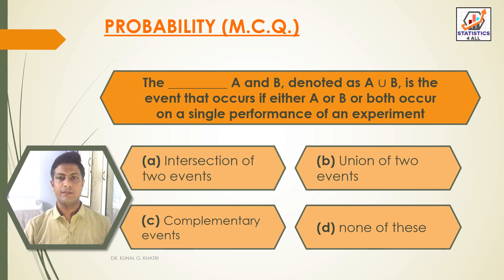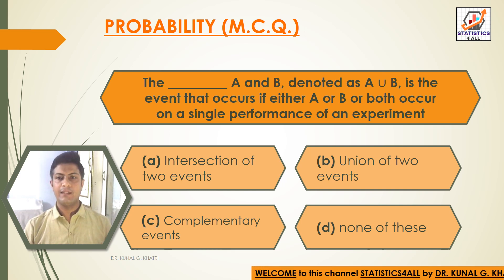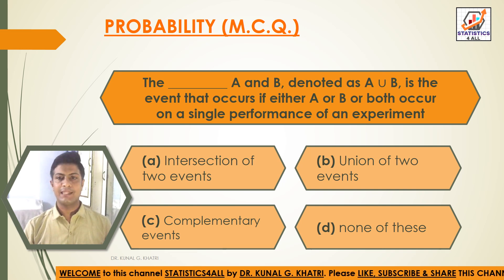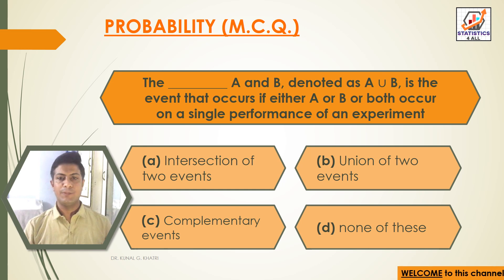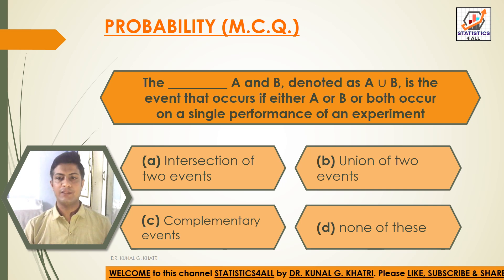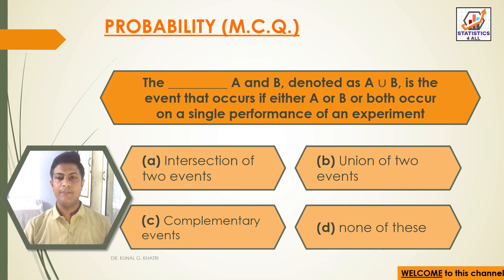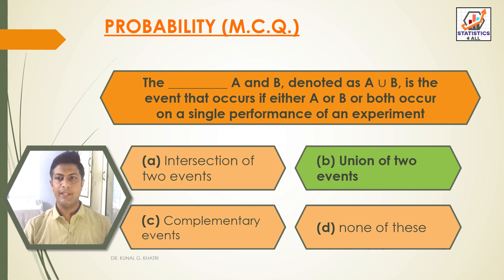Next question: dash A and B, denoted as A union B, is the event that occurs if either A or B or both occur on a single performance of an experiment. Option A: intersection of two events. Option B: union of two events. Option C: complementary events. Option D: none of these. The answer is Option B — union of two events.